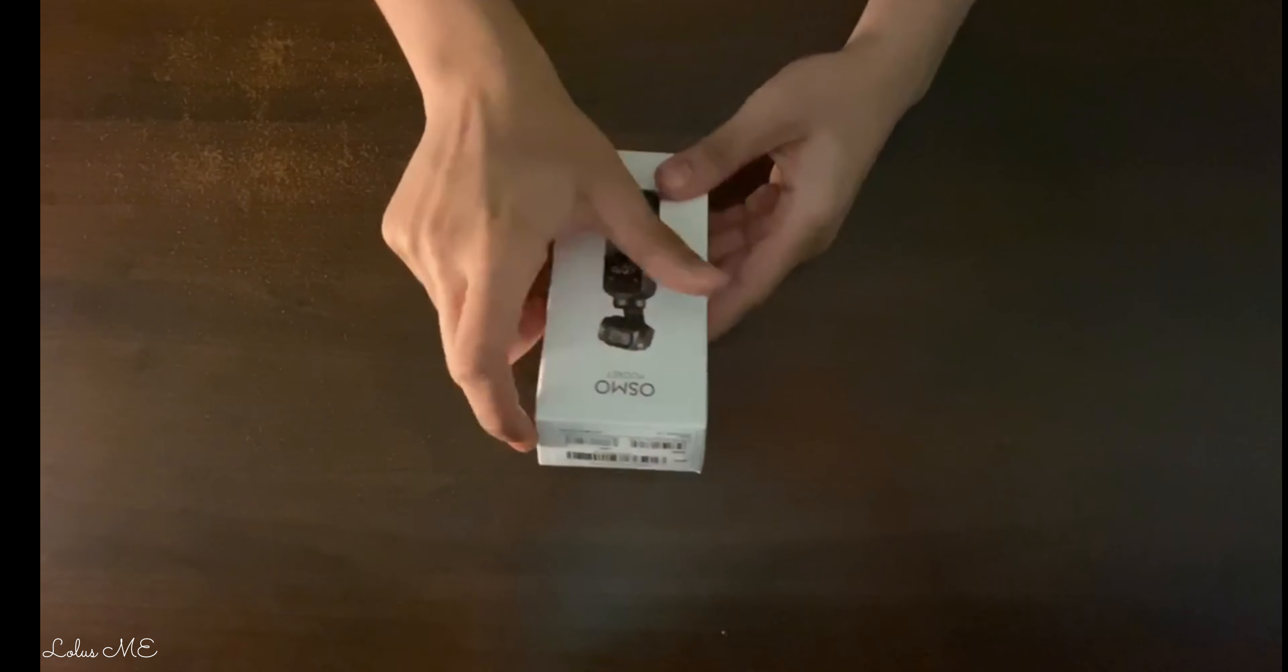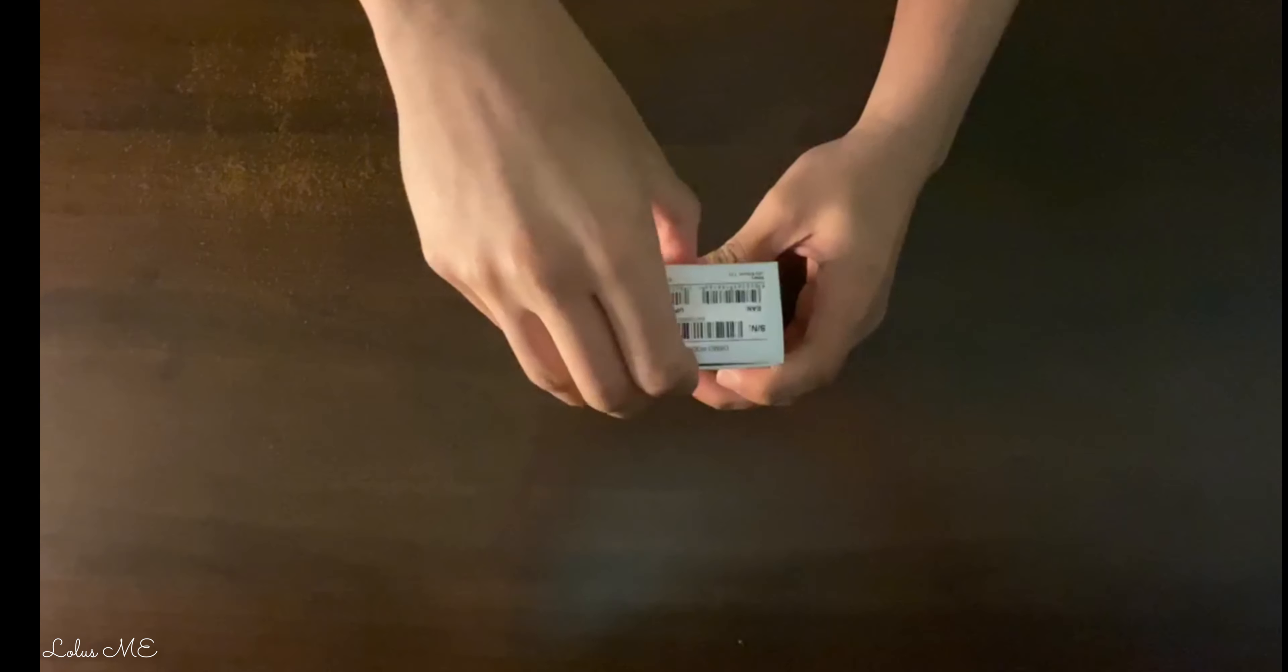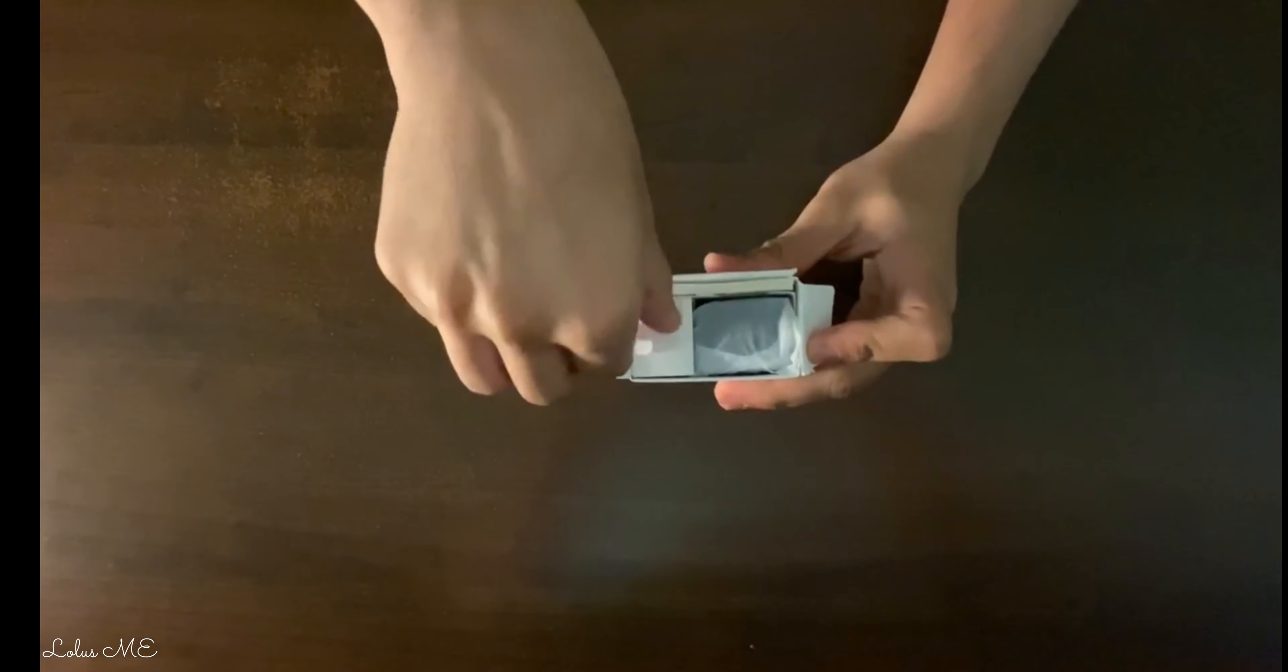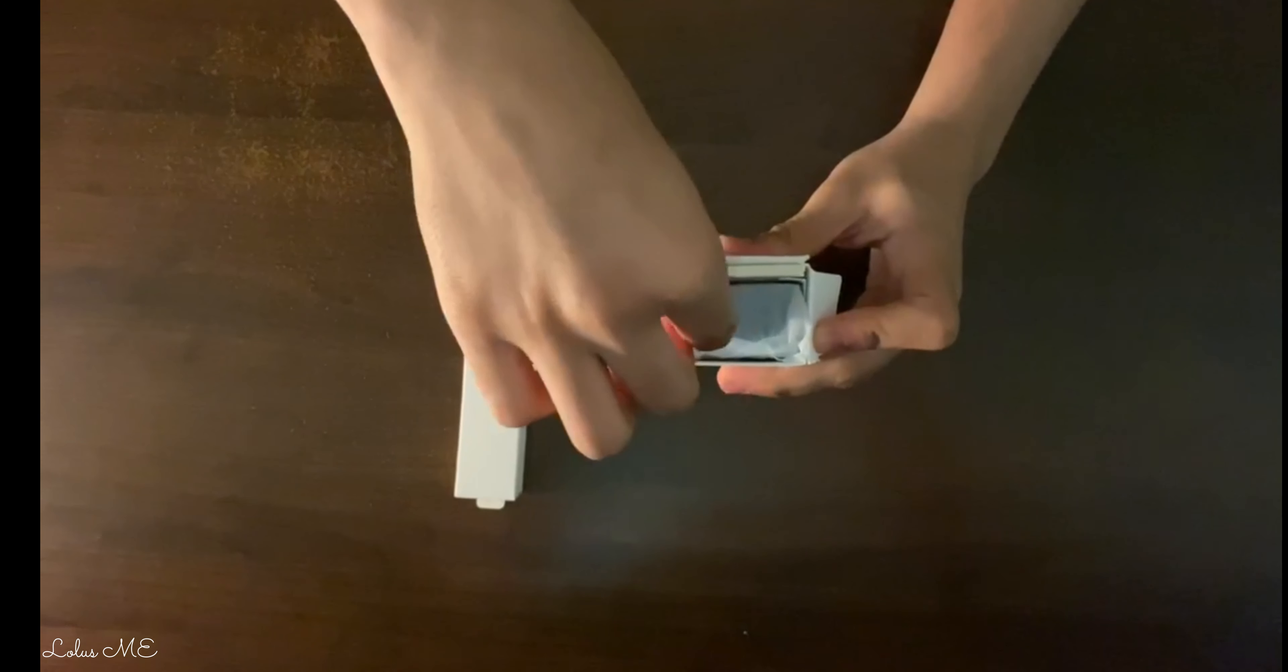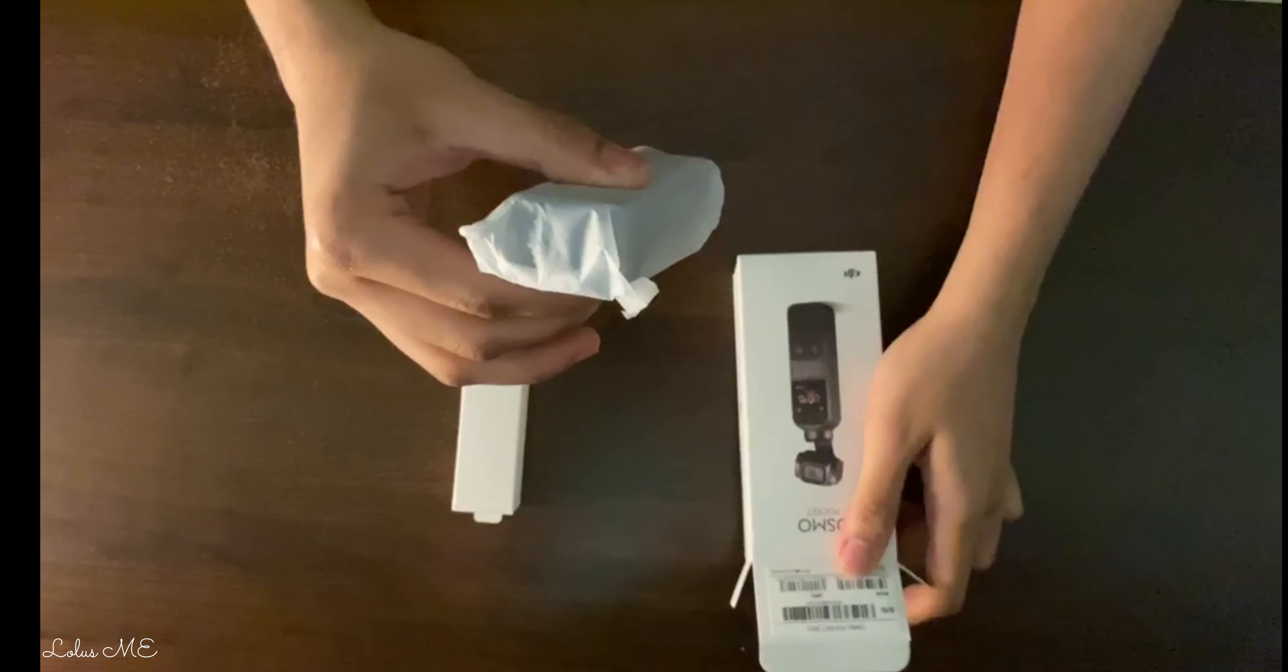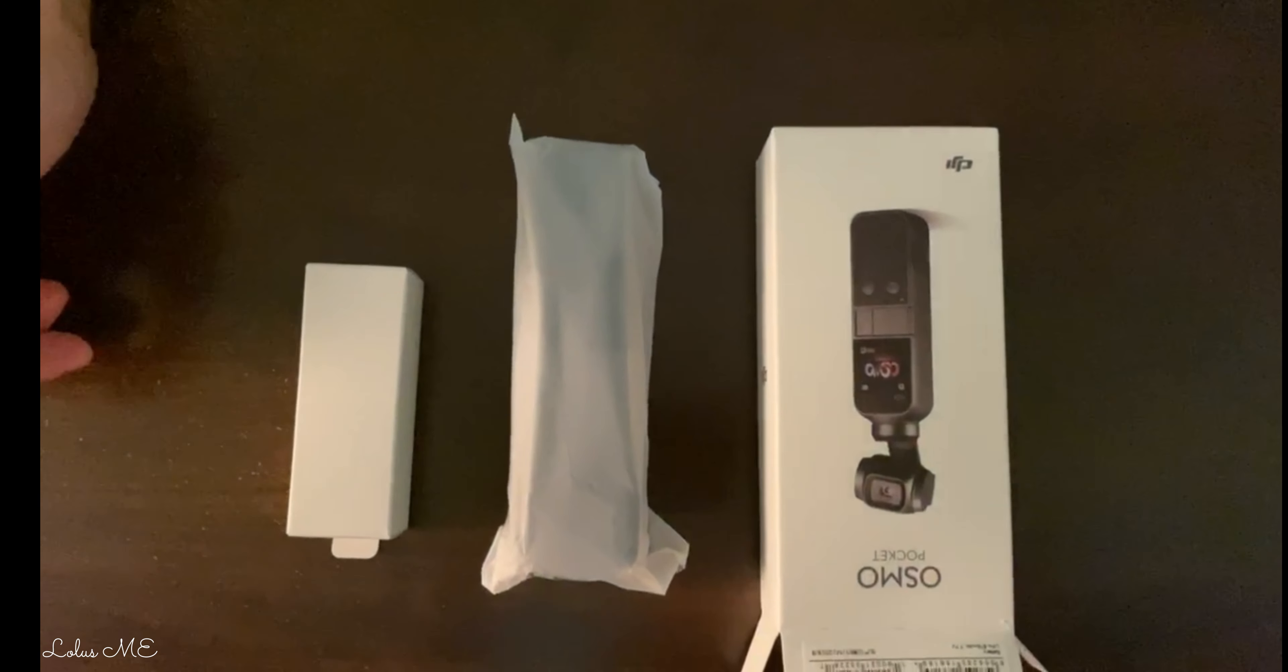Hello everyone, this is the unboxing video of the DJI Osmo Pocket. Now let's have a look inside the box. This box contains the USB cable and the cord, and here is the device itself.